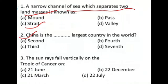China is the dash largest country of the world. China is the world's fourth largest country. The first country is Russia, the second is Canada, the third is USA, and the fourth is China.